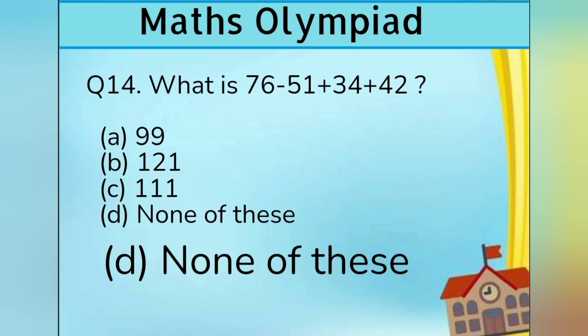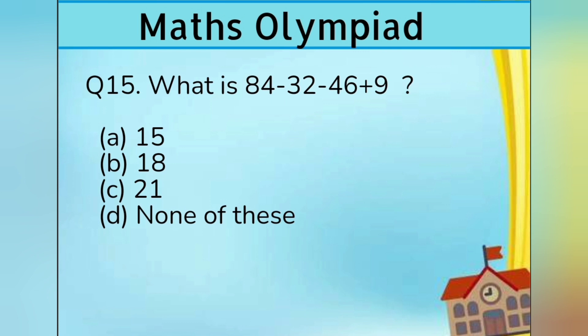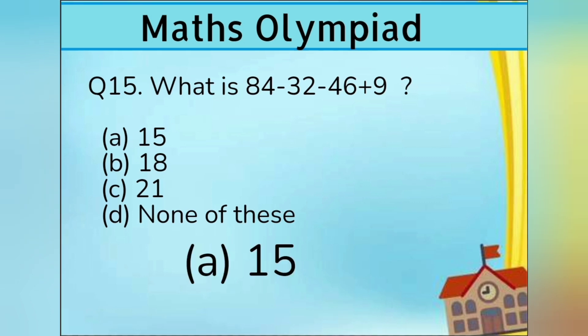Question number 15. What is 84 minus 32 minus 46 plus 9? Option A 15, Option B 18, Option C 21, and Option D none of these. Answer is Option A 15.